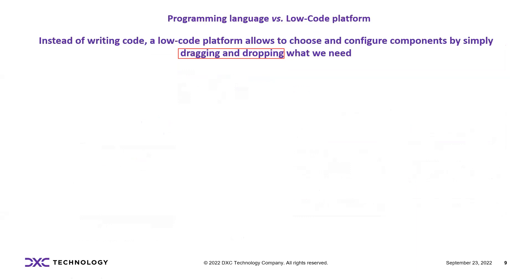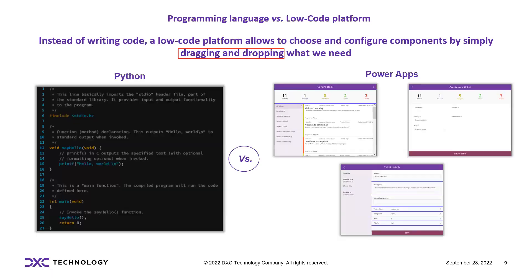Instead of writing code, the low-code platform allows you to choose and configure components by simply dragging and dropping what you need. On the left-hand side we have Python code; on the right-hand side we have the PowerApps application built using simple drag and drop.